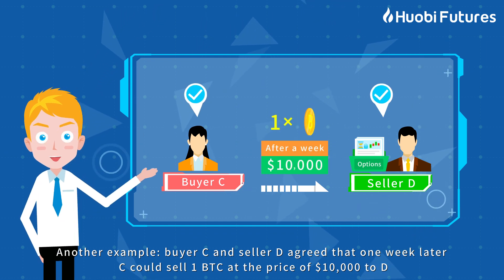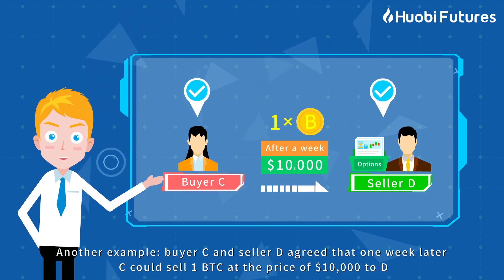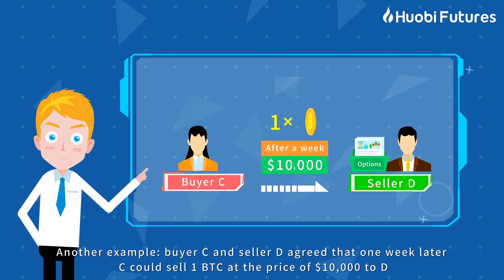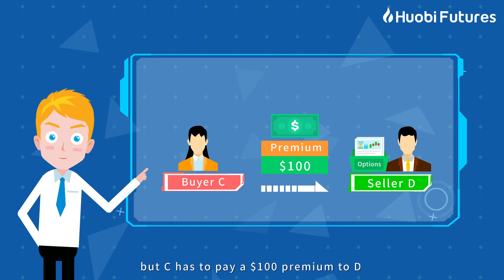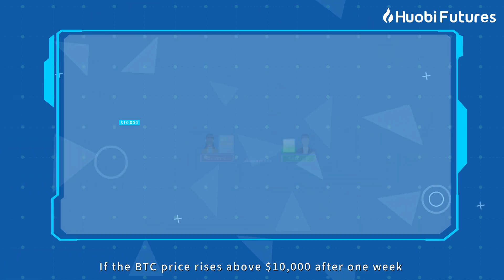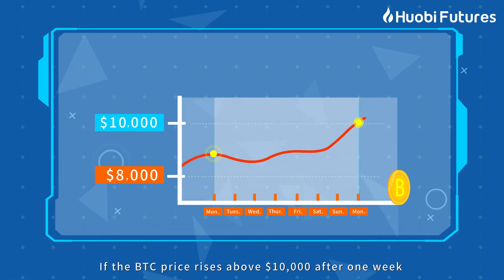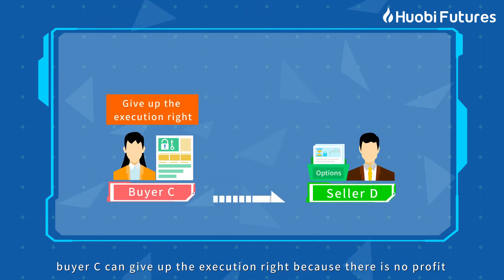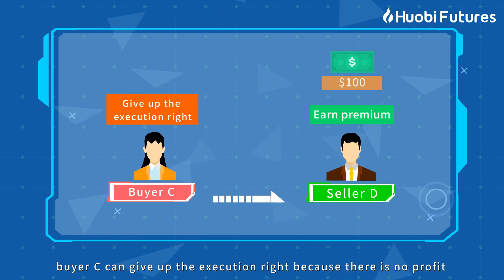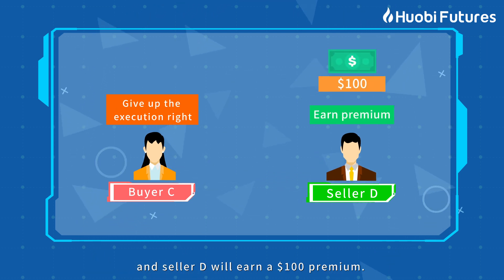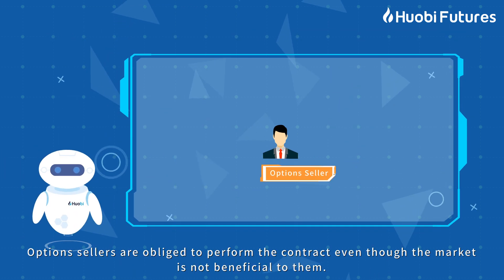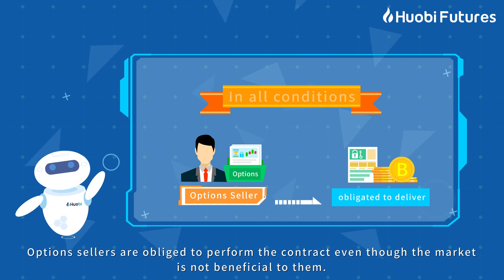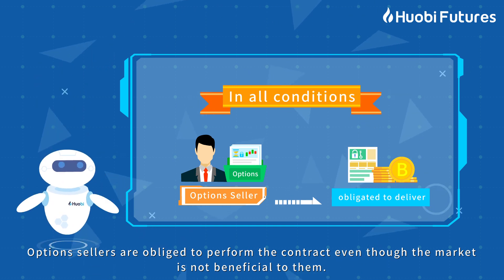Another example: buyer C and seller D agreed that one week later, C could sell one BTC at the price of $10,000 to D, but C has to pay a $100 premium to D. If the BTC price rises above $10,000 after one week, buyer C can give up the execution right because there's no profit, and seller D will earn a $100 premium. Option sellers are obliged to perform the contract even though the market is not beneficial to them.